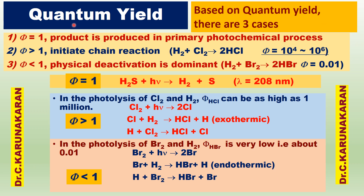Based on quantum yield, there are three types of photochemical reactions. If phi equals 1, the product is produced in the primary photochemical process and there is no secondary process. For example, hydrogen sulfide irradiated with electromagnetic radiation at wavelength 208 nm is excited in the primary step, and because the bond is weakened due to electronic transitions, the bond is broken: H2S → H2 + S. In this case, phi equals 1.